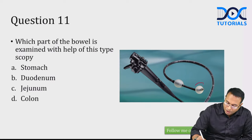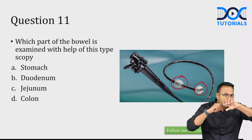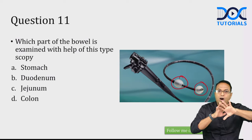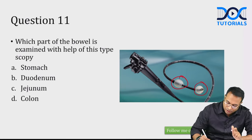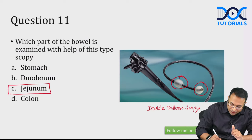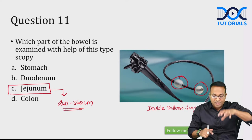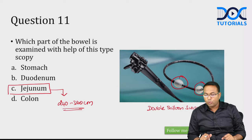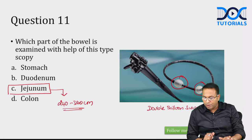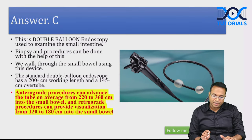The next endoscopy has two balloons attached to the tip. By inflating one balloon and pushing, then deflating and pushing, the endoscope can walk through the small bowel — this is double balloon endoscopy. It is used to examine the jejunum and can reach 240 to 360 cm of small bowel through the mouth (antegrade approach).